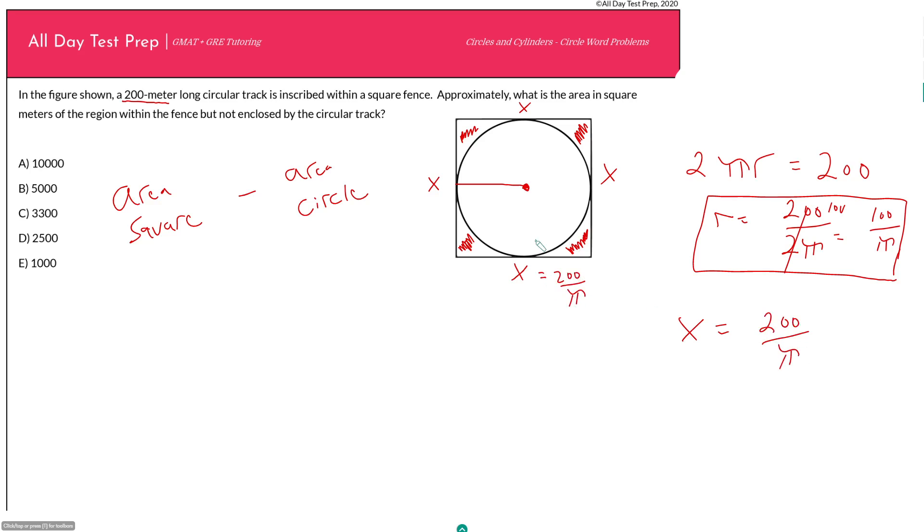If we are trying to find the area of our square, that is just length times width, or in this case x squared. So that would be 200 over π squared. We got to subtract out the area of our circle, that is just πr squared, minus π times our radius which is 100 over π squared.